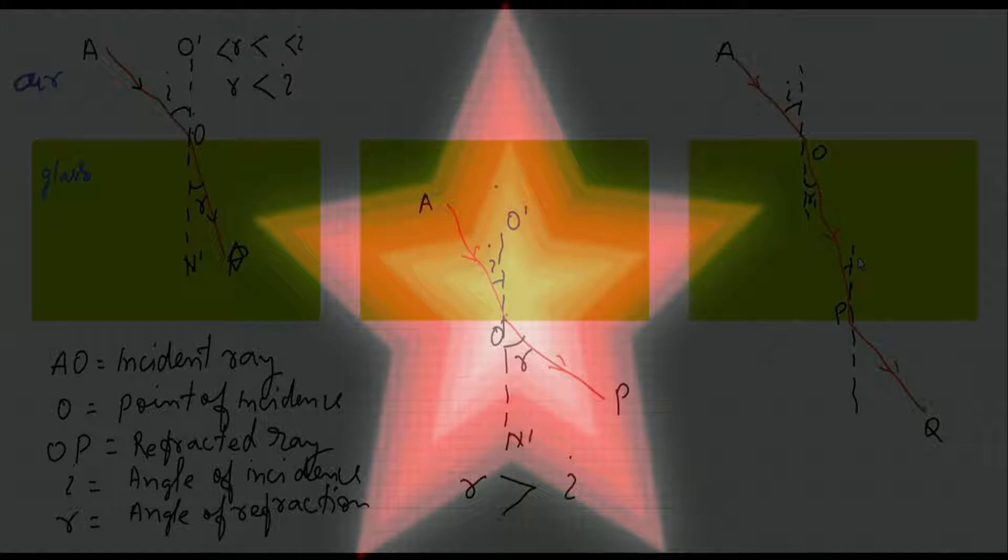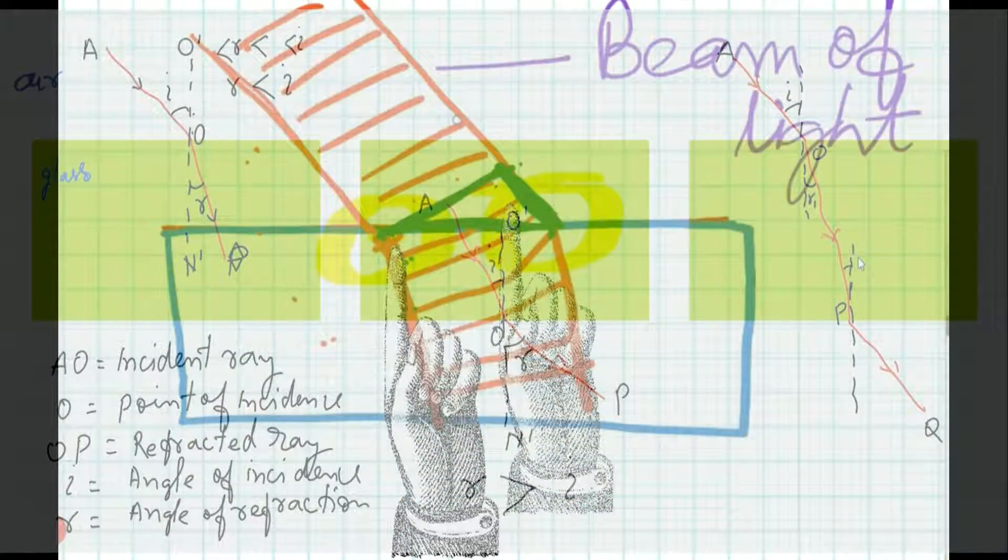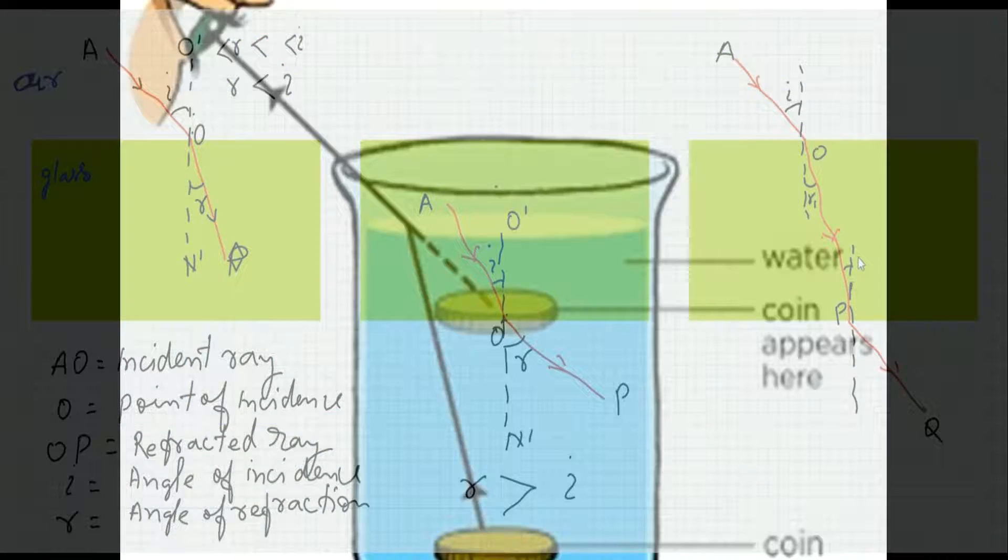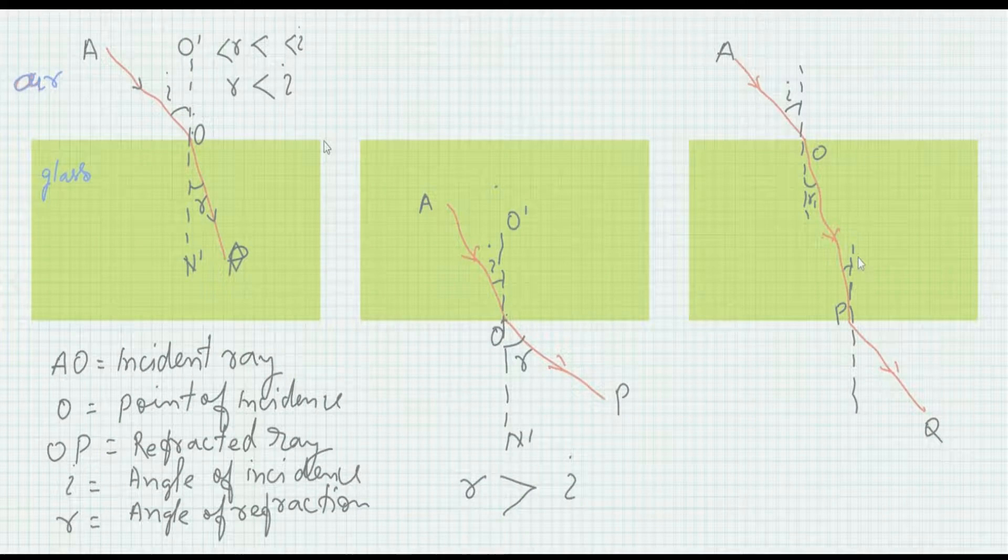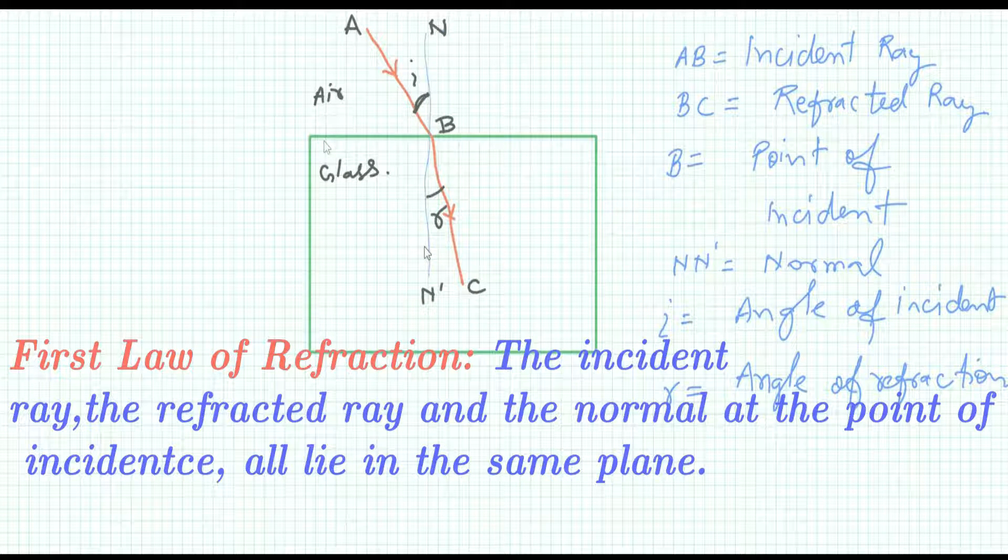Till now, we knew about the refraction of light. Basically, when light travels from one medium to another medium, what changes it suffers I have discussed. And what is the effect of the refraction, what are the causes of refraction. The refraction does not take place in a random way. There is a rule.